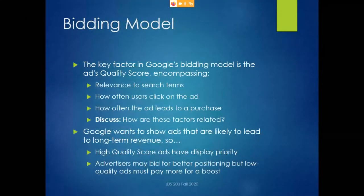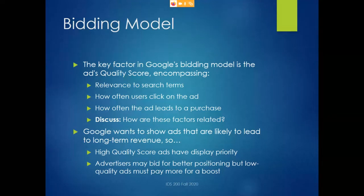Quality score includes several things. Number one, the baseline is relevance to search terms. For example, if your ad is about Chicago Bears gear and somebody searches for Chicago Bears, your ad is pretty relevant. On the other hand, if your ad is about Chicago Bears and the search is for Philadelphia Eagles, it's less relevant — both football, but different teams. If the search is for something completely unrelated like instant coffee, there's basically no relation. But that's just the baseline relevance, because you can have many ads about Chicago Bears stuff, so Google needs other criteria.